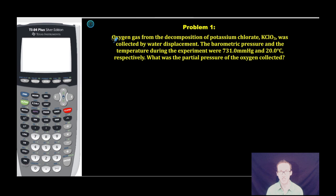Problem number one says oxygen gas from the decomposition of potassium chlorate was collected by water displacement. The barometric pressure and the temperature during the experiment were 731 millimeters mercury and 20.0 degrees Celsius, respectively. What was the partial pressure of the oxygen?